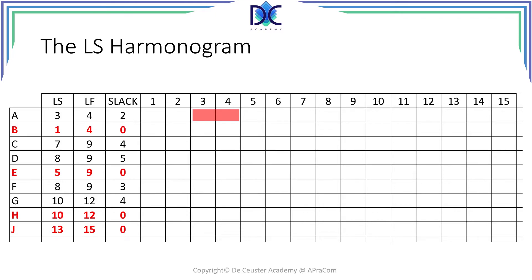For the first activity, as mentioned before, it is critical and it starts from period 3 to 4. Then we have activity B from period 1 to 4, activity C from period 7 to 9, activity D from period 8 to 9, and activity E from period 5 to 9.